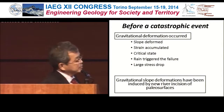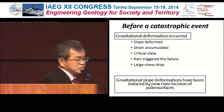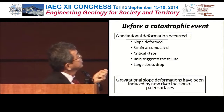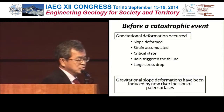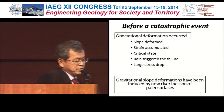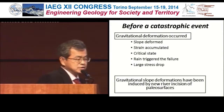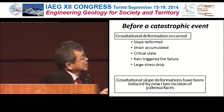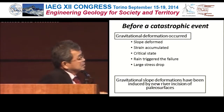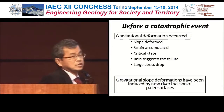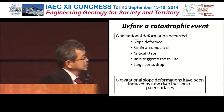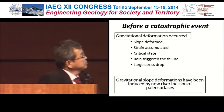Before a catastrophic event, not only did gravitational slope deformation occur, but these gravitational slope deformations have been induced by new river incision of paleo surfaces. This is very useful for pinpoint prediction, and this is useful for areal prediction.